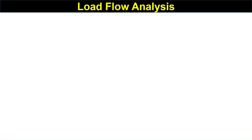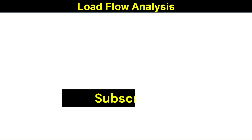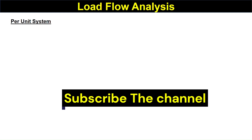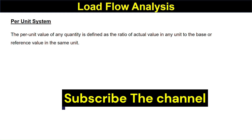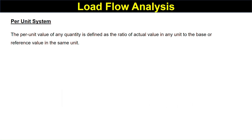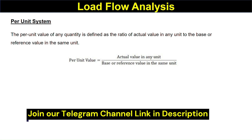ETAP focuses on the per unit system, so first we should understand what the per unit system is. The per unit value of any quantity is defined as the ratio of the actual value in any unit to the base or reference value in the same unit. So, per unit value is the actual value divided by the base or reference value.